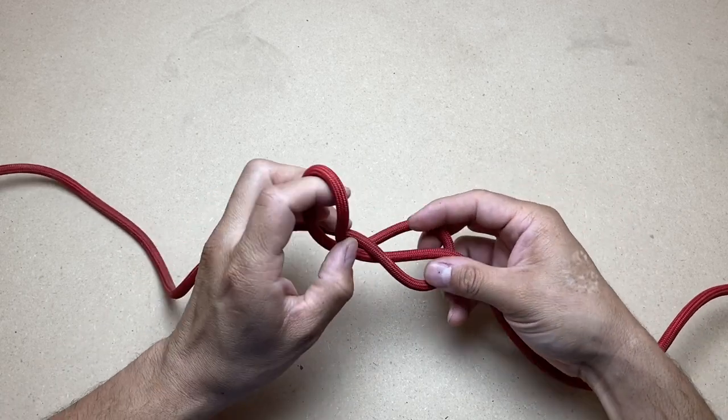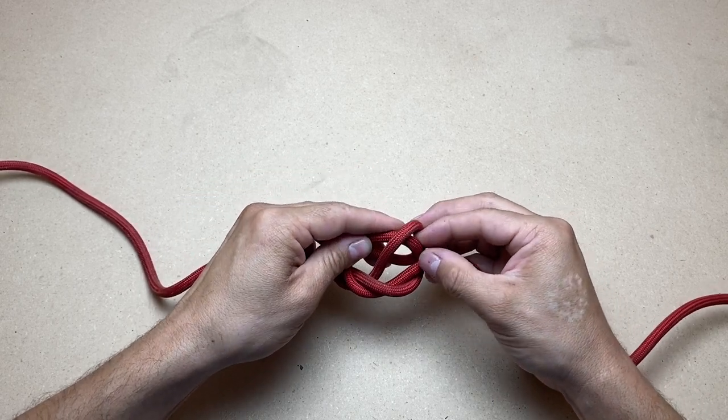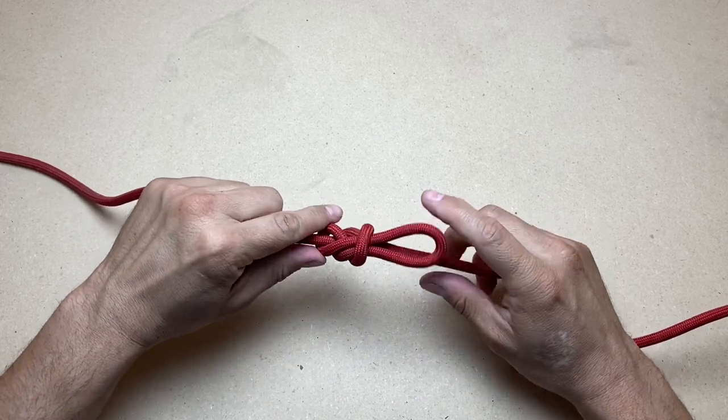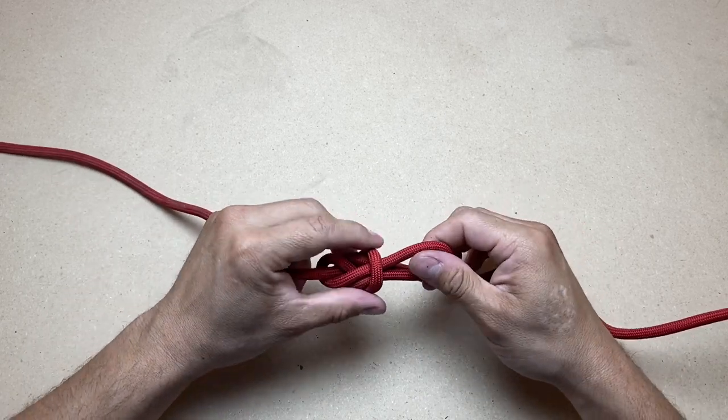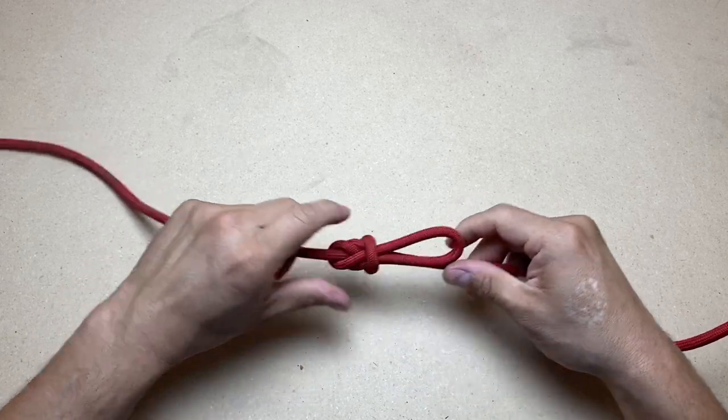So watch this. Go up from behind and pull through that window. Pull everything tight. And now my loop is going to be perfectly parallel to my rope.